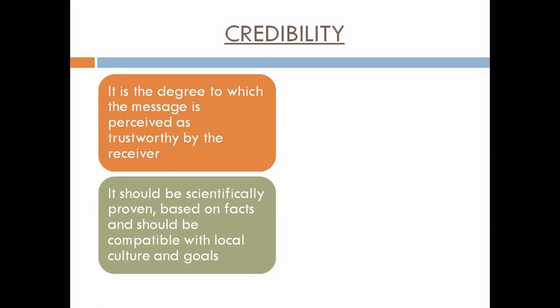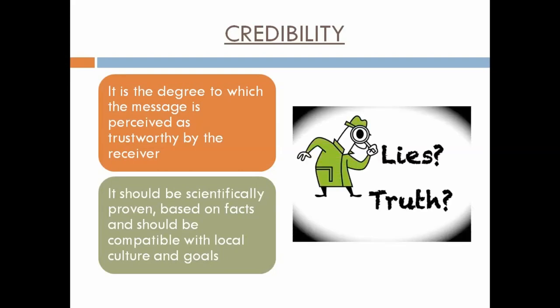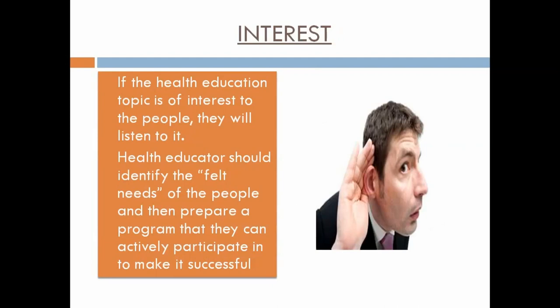Credibility means the information we provide should be very credible, reliable, and scientifically proven. We should not provide any false data — it must be based on scientific evidence. It should also be compatible with local culture and goals; we cannot create cultural problems with the data we provide. The second principle is interest — if we provide information to a group of uninterested people, there is no point.